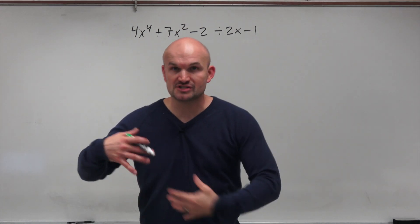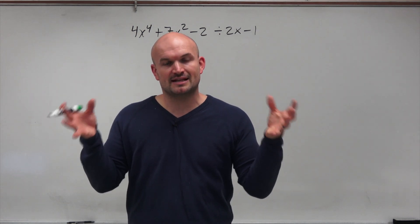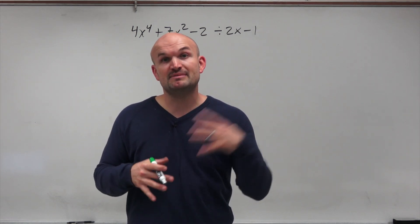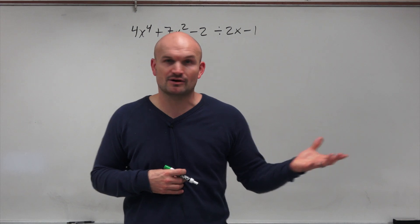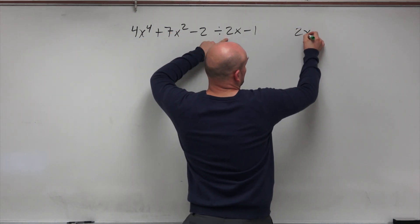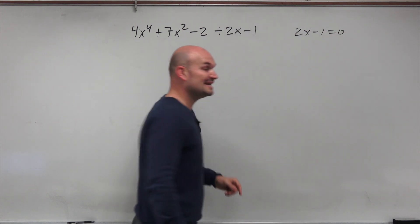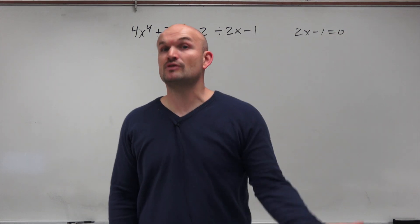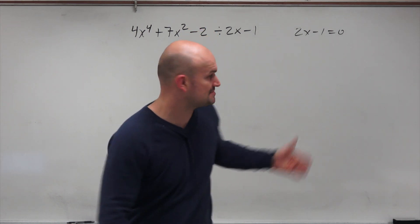If you remember our study of factors, it's very important to understand that the factors of the polynomials can be solved to be able to find the zeros. So if 2x minus 1 is a factor, then we could set it equal to 0 to find the zeros of the polynomials, or the real x-intercepts.